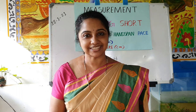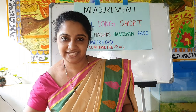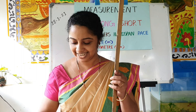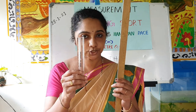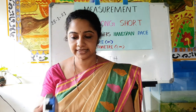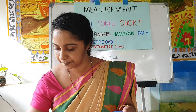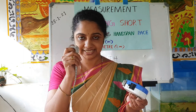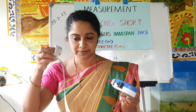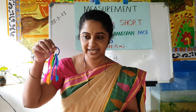I will show you some tools. What is this? This is a scale. This one is also a scale — this is a long scale and this is a short scale. What is this? This is a measuring tape. Our tailors use this type of measuring tape for taking measurements. These are measuring cups and these are spoons.